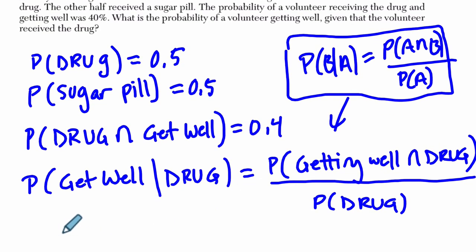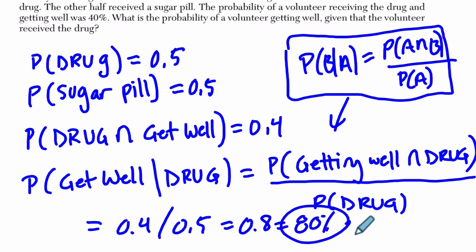Long story short, this just means that our probability is 0.4 divided by 0.5, which is 0.8. So, 80%. That's it. Alright, hope that helps.